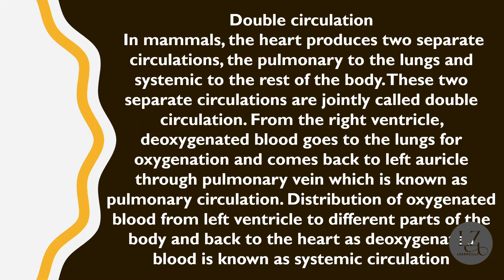Distribution of oxygenated blood from the left ventricle to different parts of the body and back to the heart as deoxygenated blood is known as systemic circulation. In this revision series we are emphasizing keywords to define terms. If you want to learn about double circulation in detail, please check the playlist for a detailed video on the function of the heart in the circulatory system.